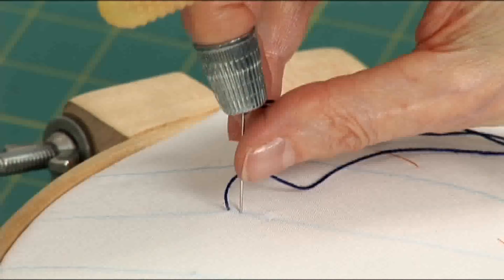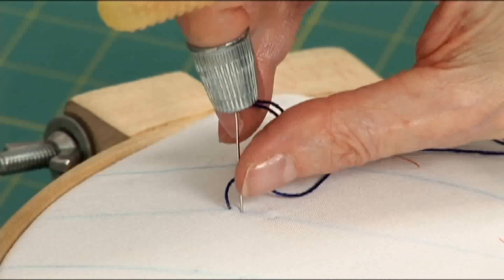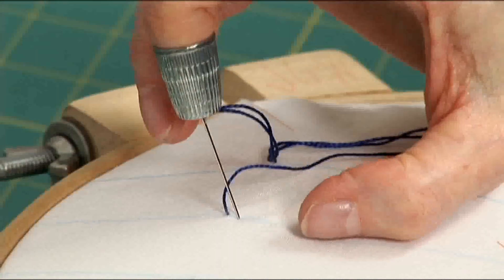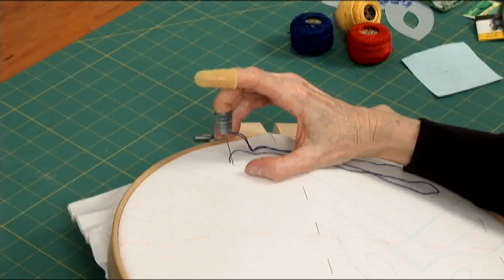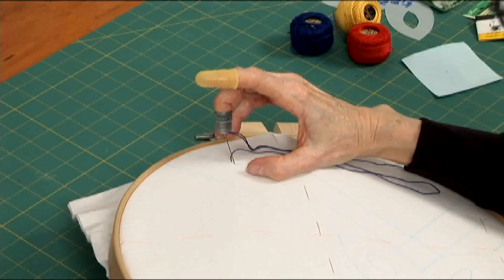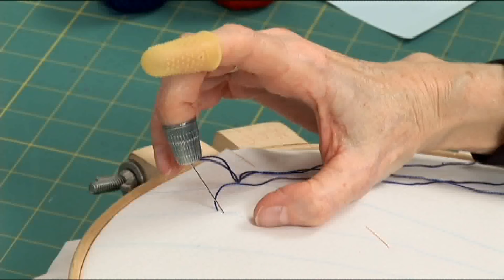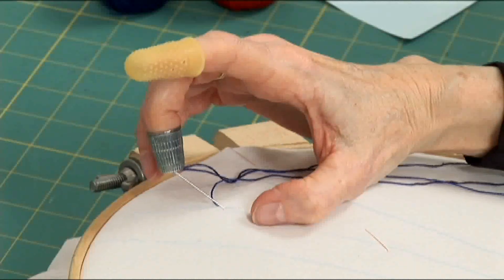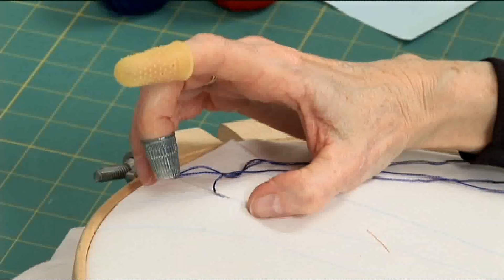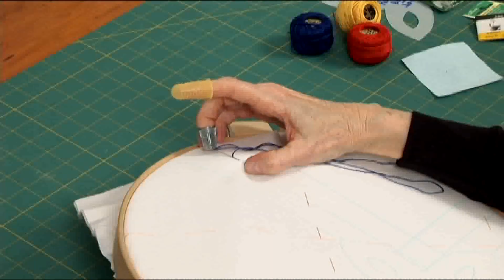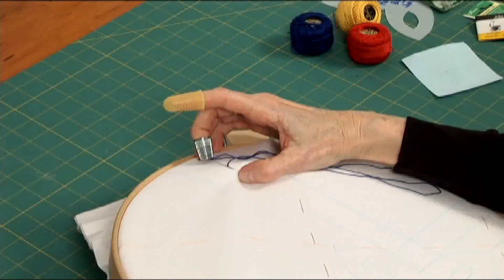Reposition the thimble to the end of the needle and back off with the thumb so that your hand is in a backward C position if you're right handed. Now you can start laying the needle down and pushing up with your underneath fingers and down with the thumb to create a little hill.